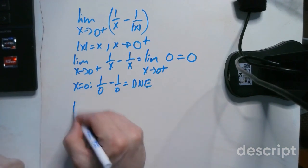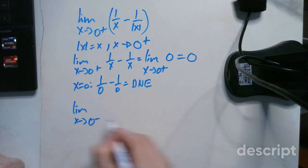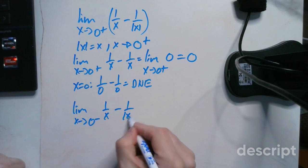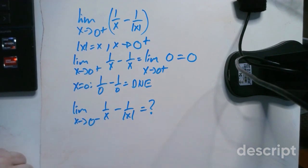Here is your quiz question. The limit as x approaches 0 from the left side of 1 over x minus 1 over the absolute value of x. What is that limit?